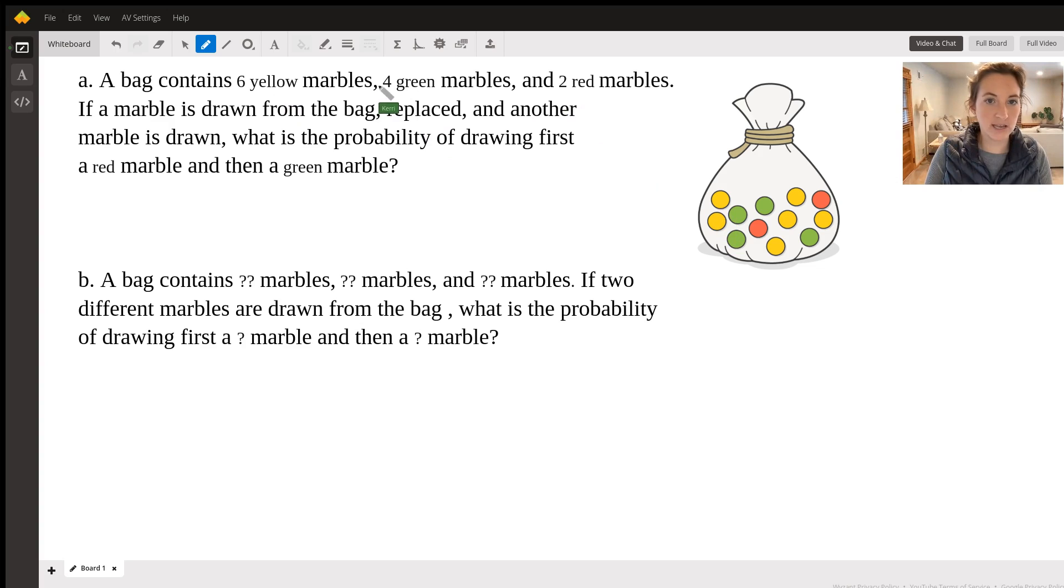First, we need to know how many total marbles are there. So if we count them all up or add the numbers together, we would get 12. So six plus four is 10 plus two is 12. So I have 12 total.